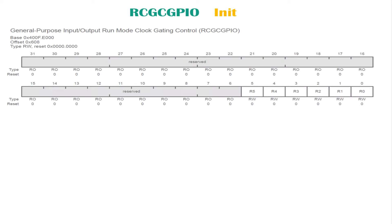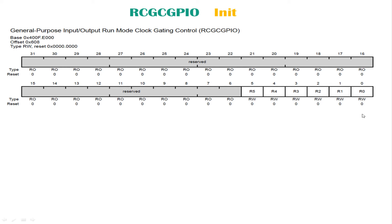Let's take a look at how the clock register RCGCGPIO is initialized. This is a snapshot from the datasheet. Bits 6 to 31 are reserved — they are read-only, we cannot touch them. Bits 0 through 5 control ports A, B, C, D, E, and F respectively. I also want you to look at the reset value shown here.